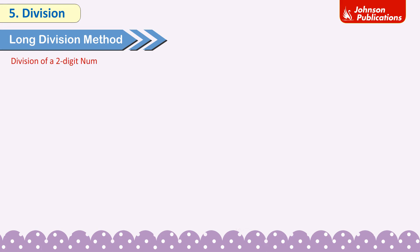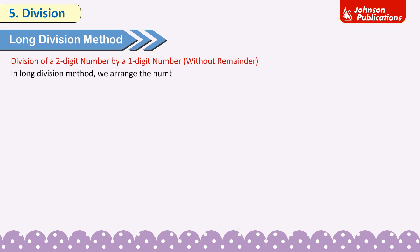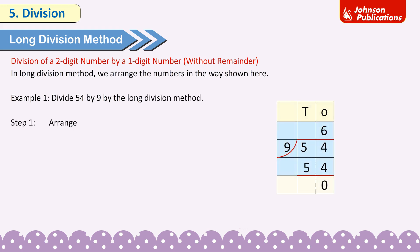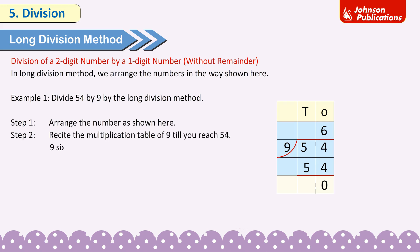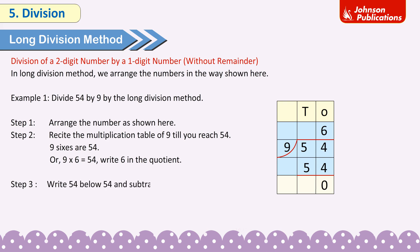In the long division method, we arrange the numbers as shown. Example 1: Divide 54 by 9. Step 1: Arrange the numbers. Step 2: Recite the multiplication table of 9 until you reach 54. 9 sixes are 54, or 9 × 6 = 54. Write 6 in the quotient. Step 3: Write 54 below 54 and subtract. We get 0 as the remainder. Therefore, 54 ÷ 9 = 6.